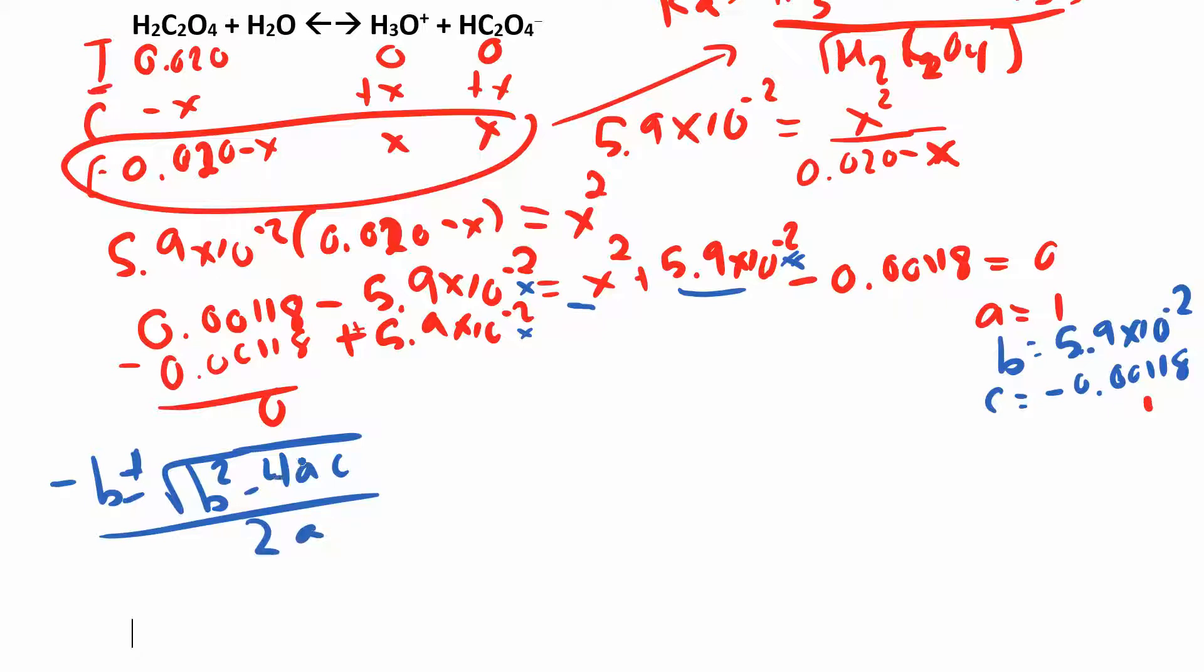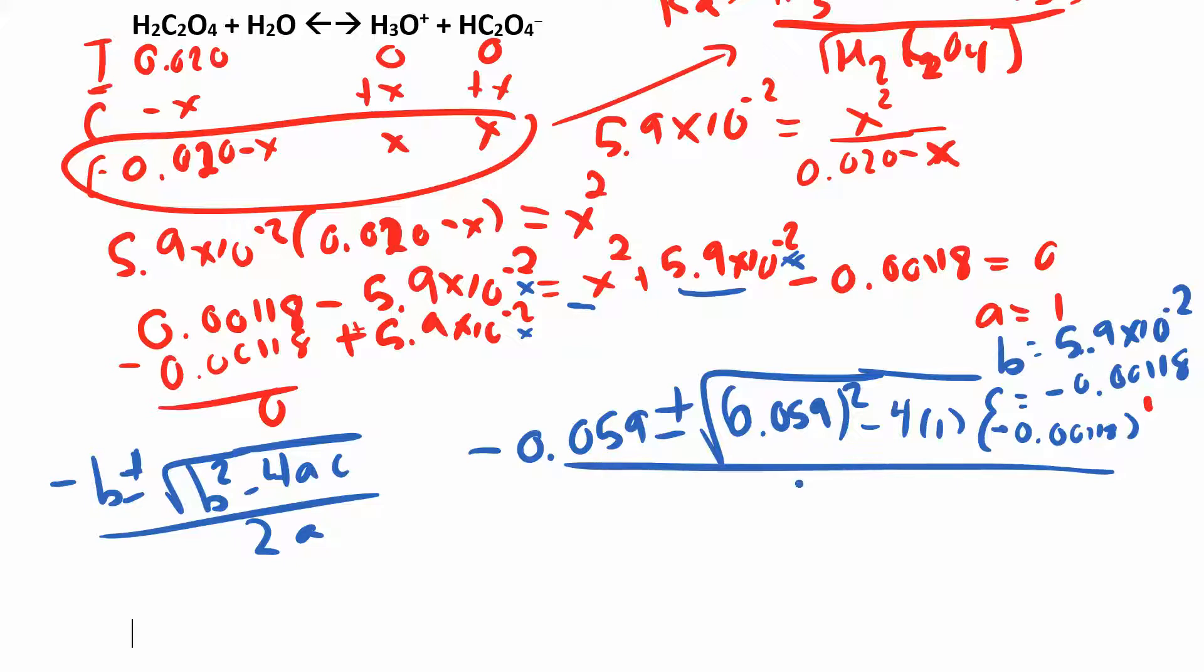So you can plug all this in. I'm going to switch from 5.9 times 10 to the negative 2, that's just 0.059. So I have negative 0.059 plus or minus - that's negative b - plus or minus b squared, 0.059 squared minus 4 times a times c, which is negative 0.00118, all over 2 times 1.